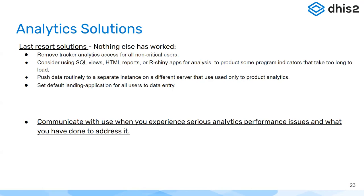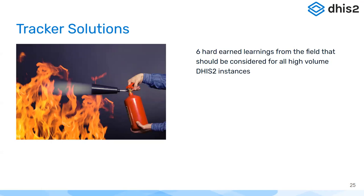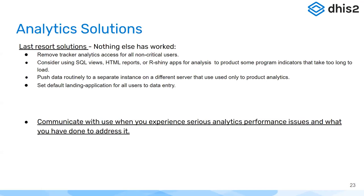As last resort solutions — hopefully no one in this room will ever need these — remove tracker analytics for non-critical users; don't share tracker analytics with them. Consider using SQL views, HTML reports, or Shiny apps, which can have much better performance. You can also push data routinely to separate instances — many large-scale implementations have a separate analytics instance and a data entry instance. Traffic on analytics doesn't affect traffic on data entry, so you can have 20,000 concurrent users on data entry without affecting the analytics instance. We are making significant performance improvements with big API changes coming in the near future.